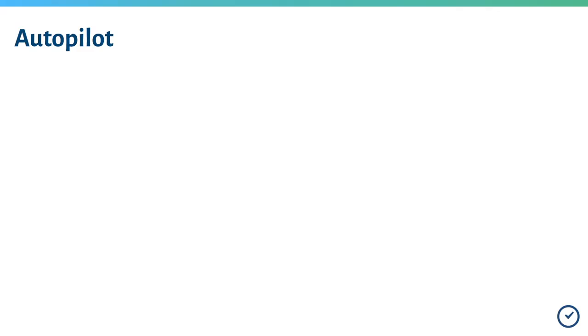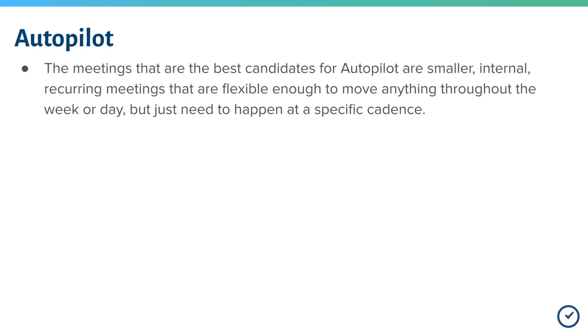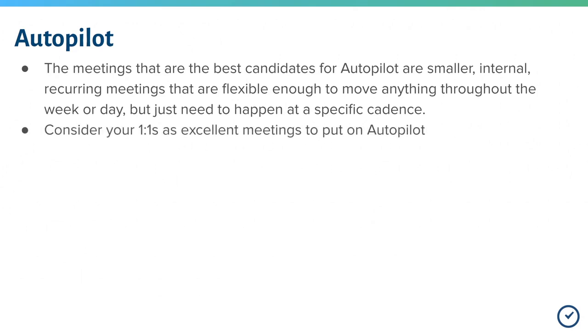First is autopilot. Optimizing your calendar is made possible through this feature. You are in control of which meetings are put onto autopilot. Consider the best candidates to be small, internal, recurring meetings that are flexible enough to move throughout the week but don't have to happen at a specific time. One-on-ones are an excellent candidate for autopilot.